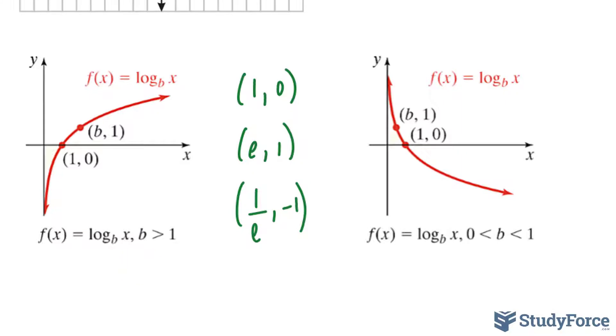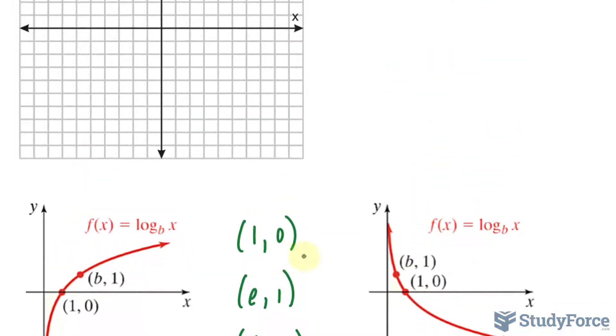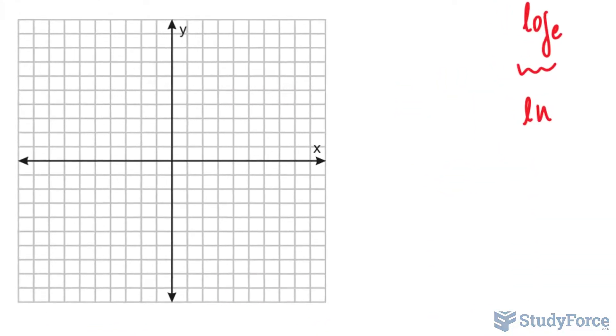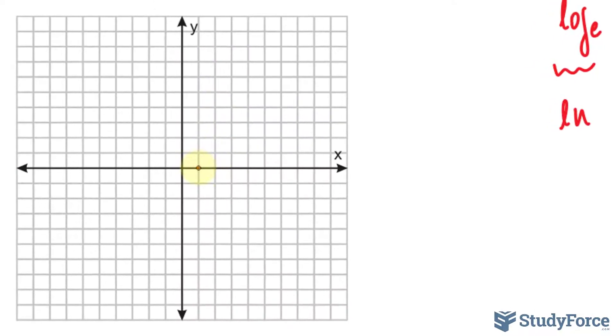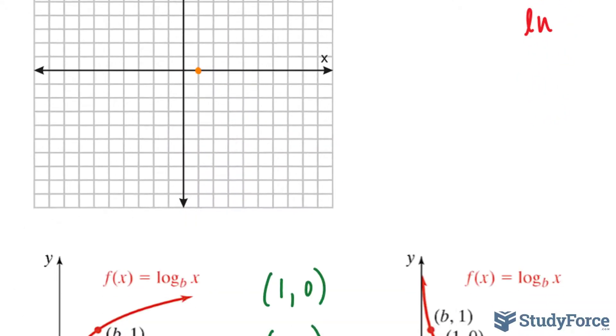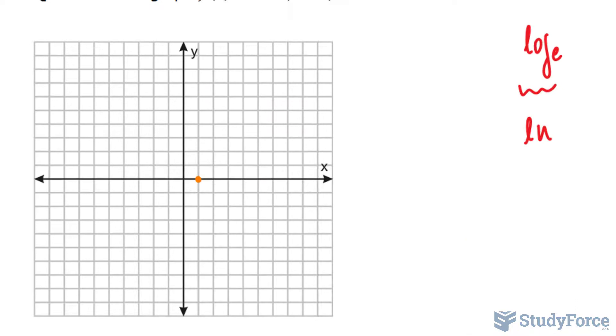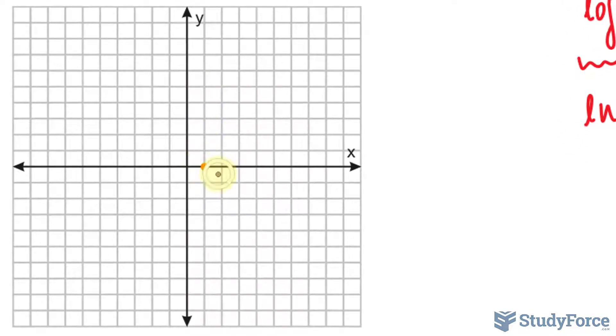OK. Let's plot those. I'll start with 1 and 0. 1 and 0 is easy. That's this point right here. We will have a point at e and 1. e is 2.71. So 1, 2, and 2.71 is between these two blocks and 1. So let's place that point right here.